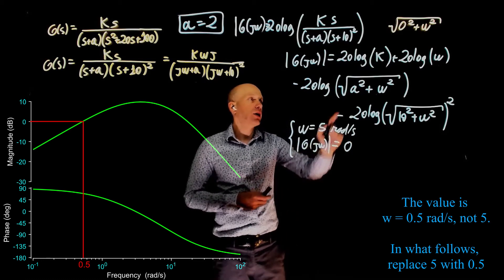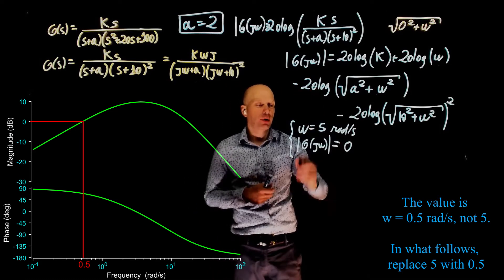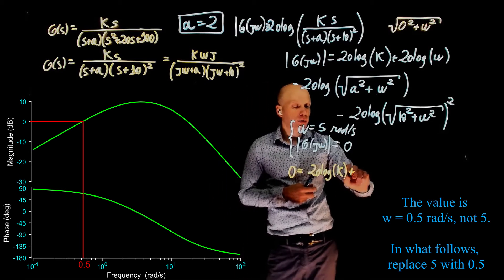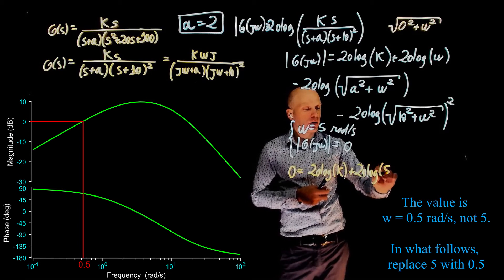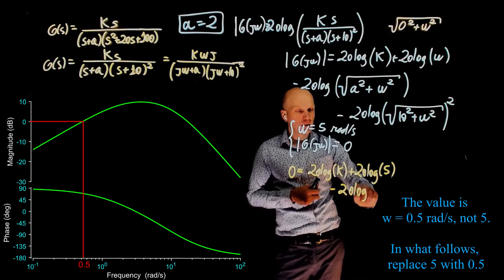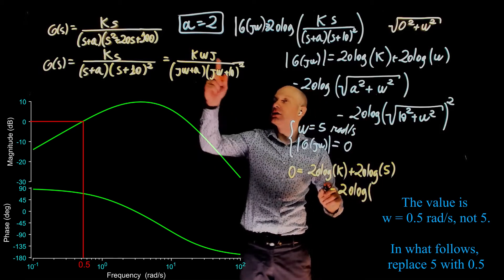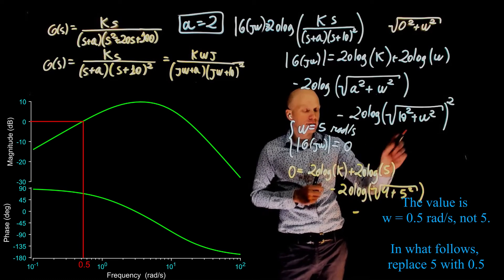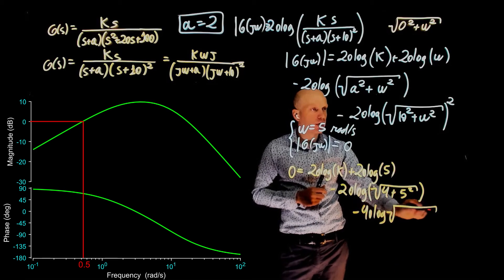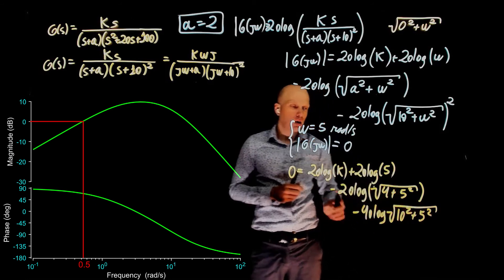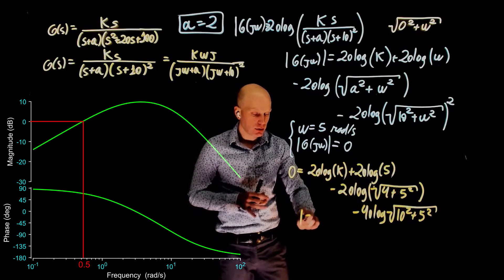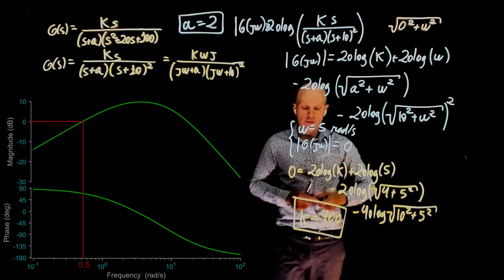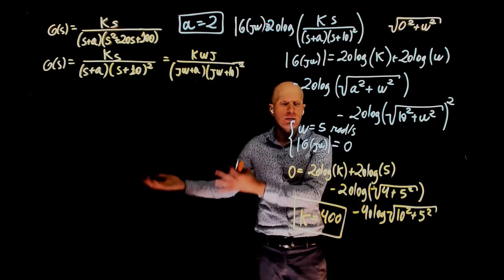Now simply replace these values in the expression we just found. We are left with 0 equals to 20 log of k plus 20 log of 5 minus 20 log of a squared, a is 2, so 4, square root of 4 plus 5 squared, and minus 40 log of square root of 10 squared, plus 5 squared. You see that in this expression the only variable is k, solving for k gives k equals to 400. And here we have both parameters obtained for a hypothetical experimental Bode plot.